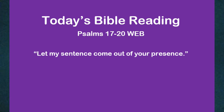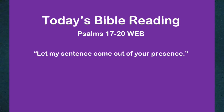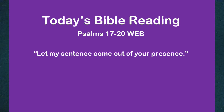Chapter 19. For the chief musician, a psalm by David. The heavens declare the glory of God. The expanse shows his handiwork. Day after day they pour out speech, and night after night they display knowledge. There is no speech nor language where their voice is not heard. Their voice has gone out through all the earth, their words to the end of the world. In them, he has set a tent for the sun, which is as a bridegroom coming out of his room, like a strong man rejoicing to run his course. His going out is from the end of the heavens, his circuit to its ends. There is nothing hidden from its heat.